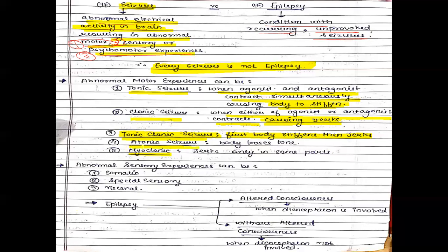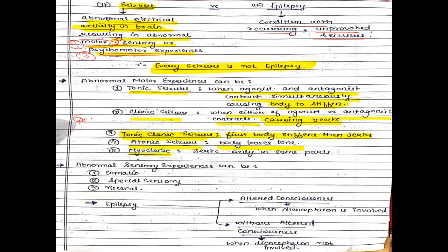Then atonic seizure — atonic seizure is also called absence seizure. If there is no jerking or muscle contraction, rather the body loses tone, this would be petit mal seizure. So two important terms: grand mal seizure, which is tonic-clonic; and petit mal, which is atonic seizure.